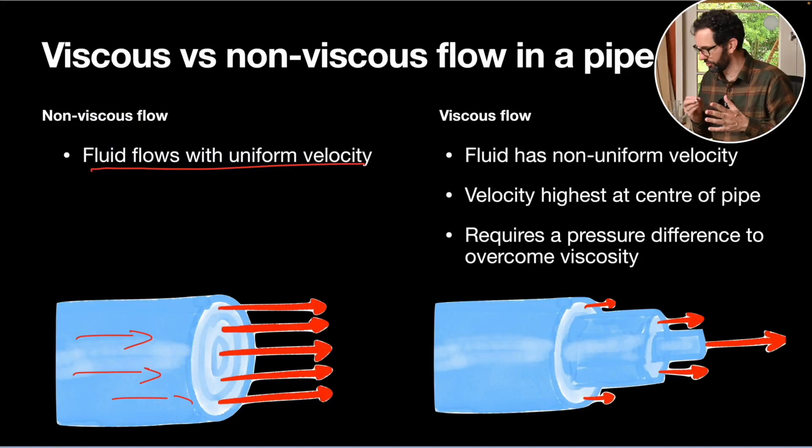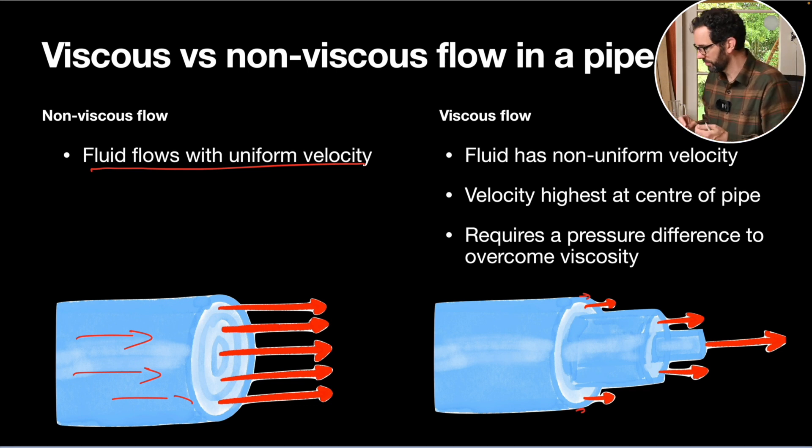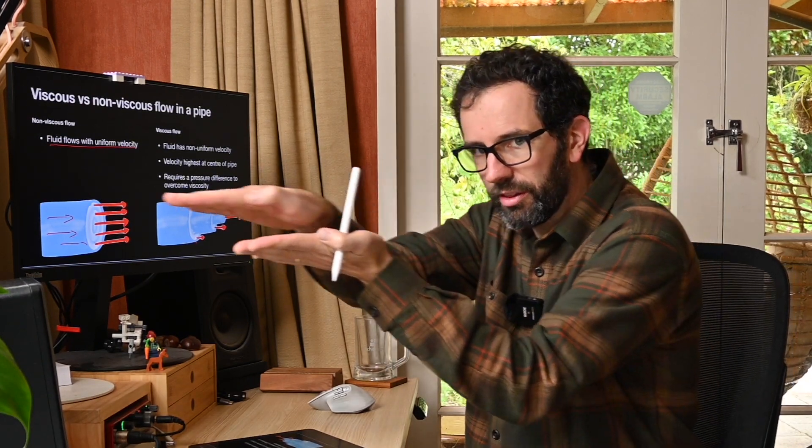Whereas when we have viscosity, that's not what happens. In viscosity, the bits closest to the edge basically have pretty much no velocity, whereas the flow of the fluid in the middle of the pipe is faster. So the fluid in the middle is moving quicker, which means it's rubbing on the fluid beside it as it goes past, because if one thing's going faster than another, they're going to naturally rub against each other.